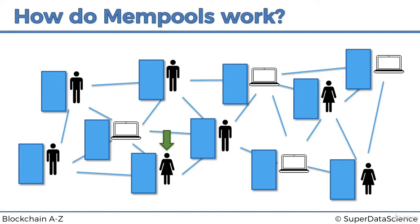Let's look at an example. Let's say Susan over here wants to send some money to somebody. We'll talk more about transactions and wallets later on, but for now let's just say she wants to do a transaction. What happens? She conducts a transaction and that transaction gets added to her mempool, then it gets broadcasted or relayed across the network.